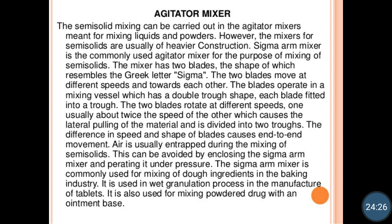While using the agitator mixer, there is a chance of air entrapment, and this can be avoided by enclosing the sigma arm mixture and operating it under pressure. The sigma arm mixer is commonly used for mixing of dough ingredients in baking industries. It is also used for the wet granulation process in the manufacture of tablets, and for making powder drug with an ointment base.